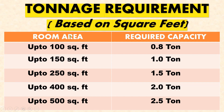If the room size is up to 100 square feet, then 0.8 tonne AC is recommended. Similarly, for up to 150 square feet area, 1 tonne. Up to 250 square feet, 1.5 tonne. Up to 400 square feet, 2 tonne is recommended. Up to 500 square feet, 2.5 tonne. And if your area is more than this, I would suggest you to use multiple air conditioners.